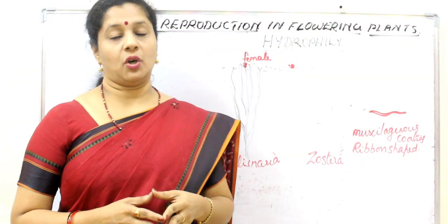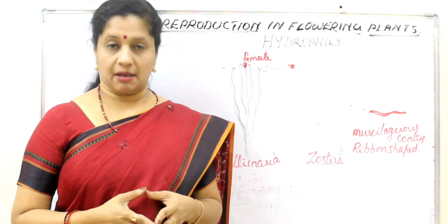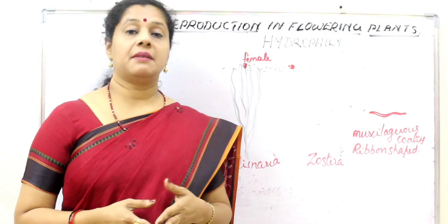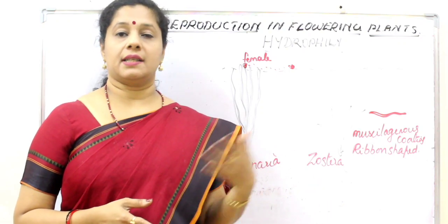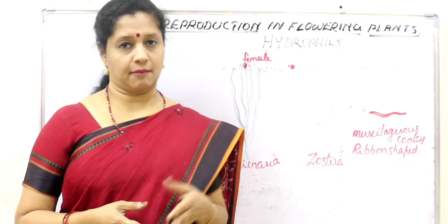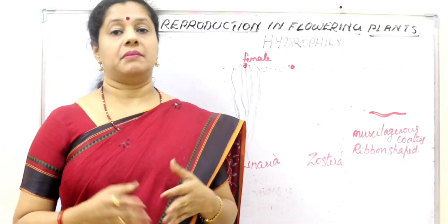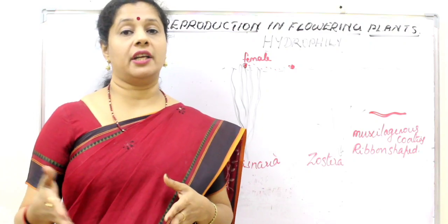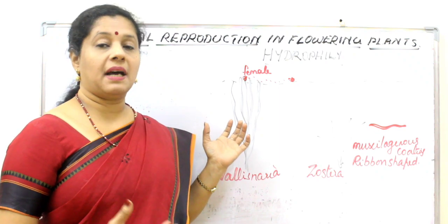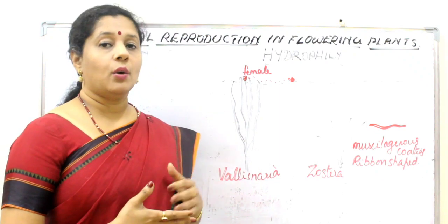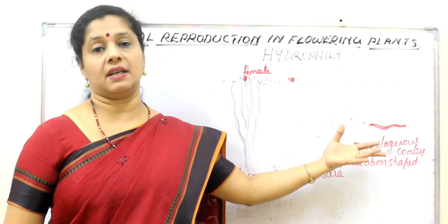Hydrophily or water pollination is not a very popular means of pollination among plants. Even hydrophytic plants need not carry out hydrophily — water hyacinth, lotus, and water lily all have insect pollination. Only about 30 genera of plants have hydrophily. Hydrilla and Vallisneria are freshwater plants which carry out hydrophily, whereas sea grass or Zostera is a marine variety which carries out hydrophily.